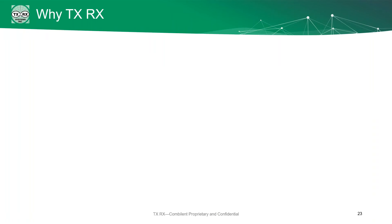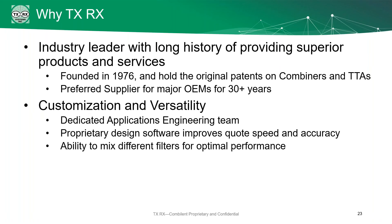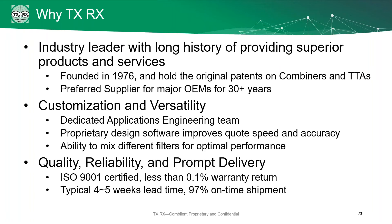Why are we going to choose TXRX over someone else? The first thing is that we're the industry leader — we have a history of providing superior products and services. We were founded in 1976, we own the patents for combiners and TTAs, and we've been a preferred supplier for some major OEMs for 30 years. Second, we have a dedicated applications engineer to customize your system, proprietary design software to get you a fast and accurate quote, and we can mix and match different filters for optimal performance. Finally, we've got a record of quality, reliability, and prompt delivery. We're ISO 9001:2015 certified, we have less than 0.1% warranty return rate, and we can typically ship in four to five weeks — 97% on time to that goal.